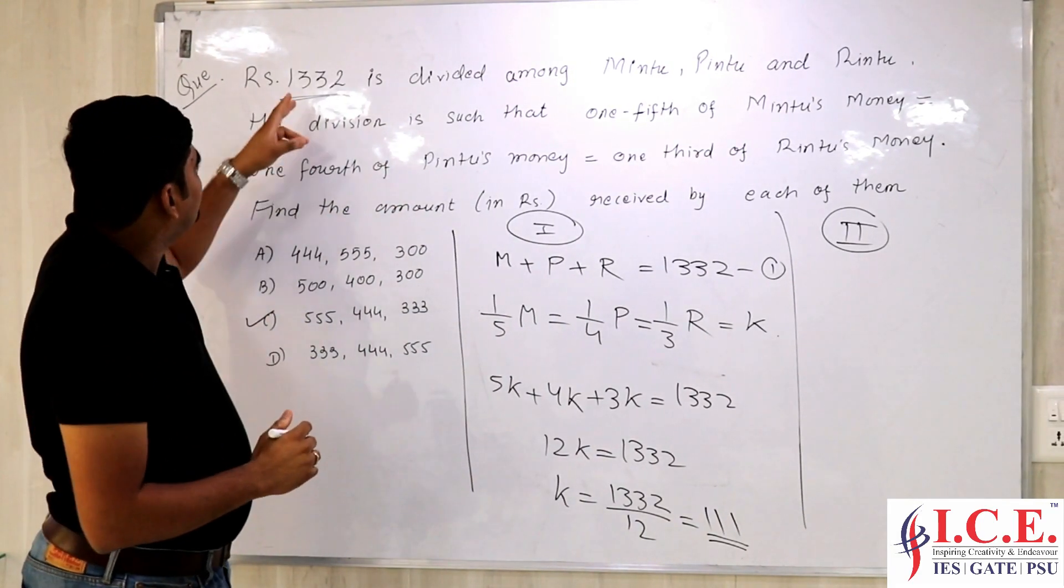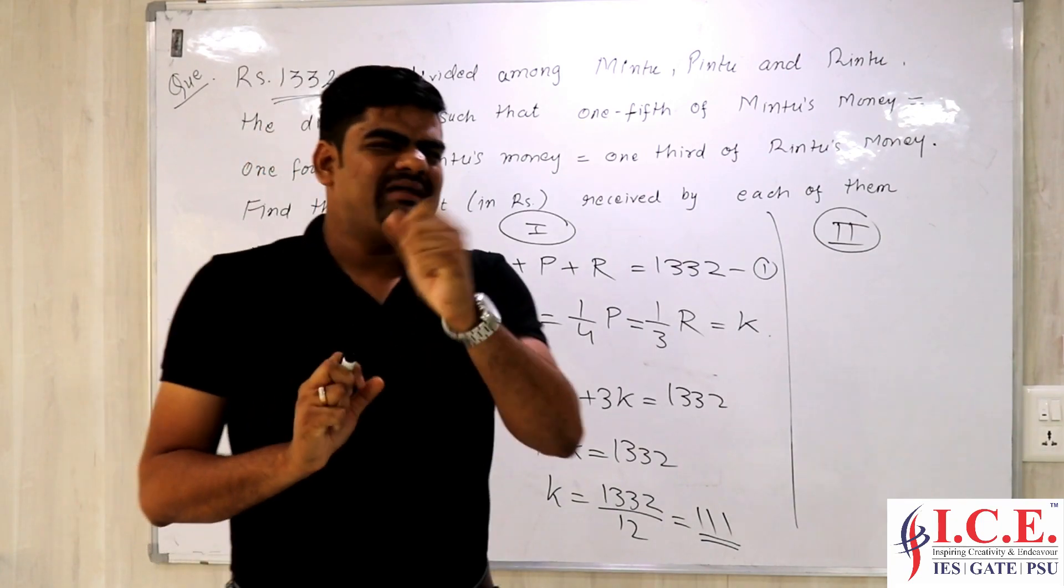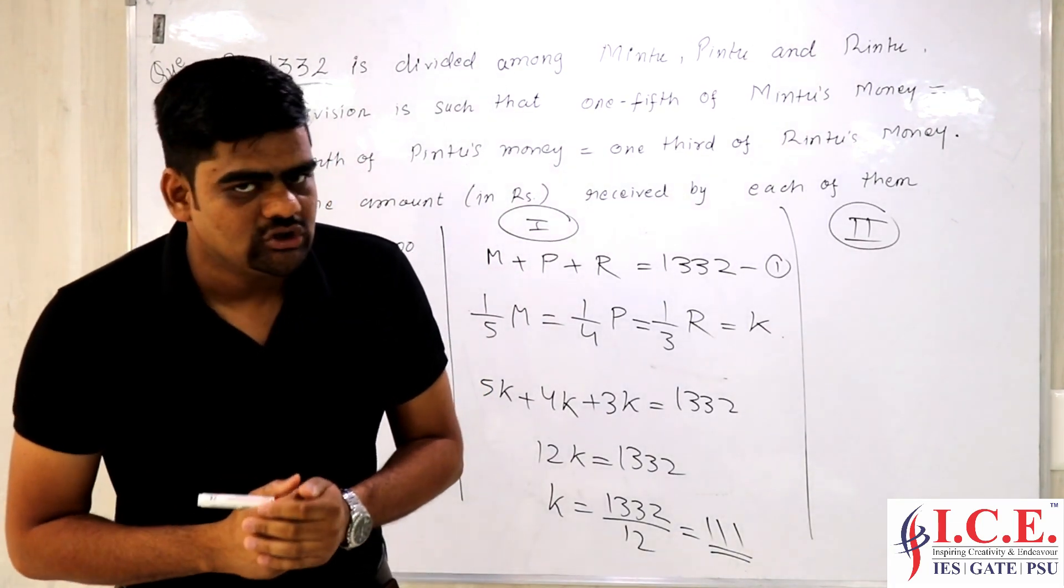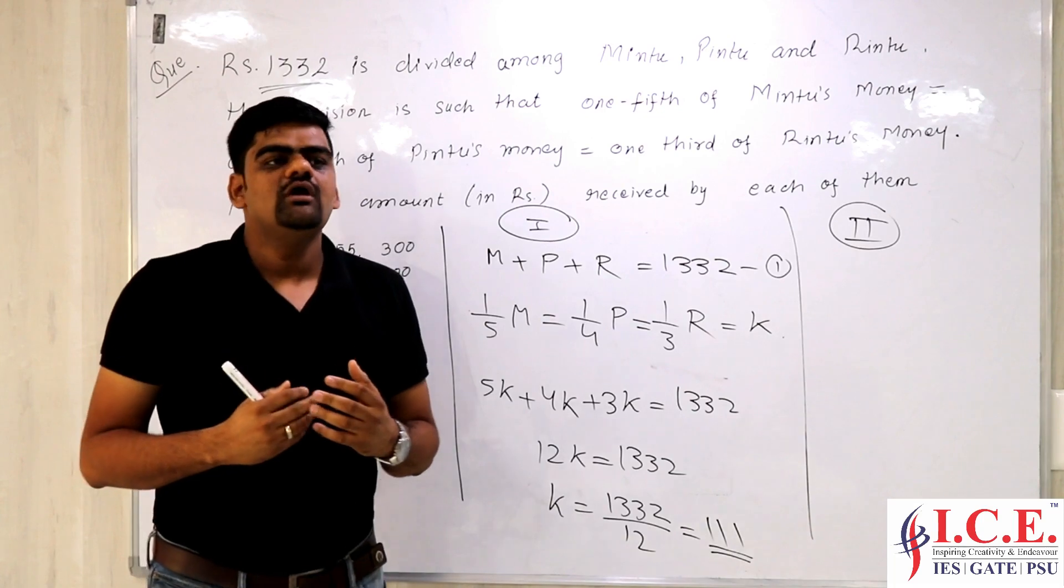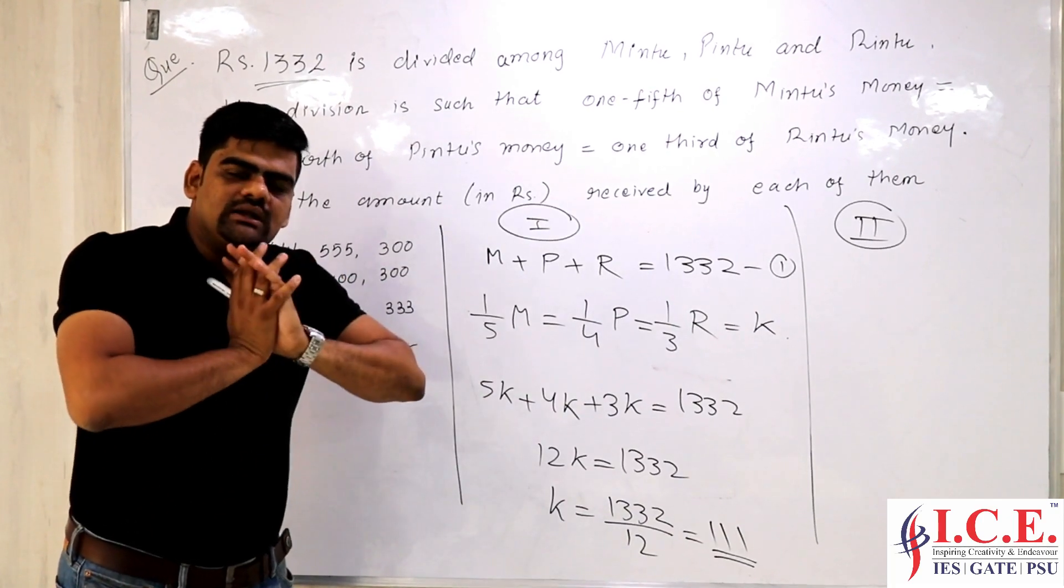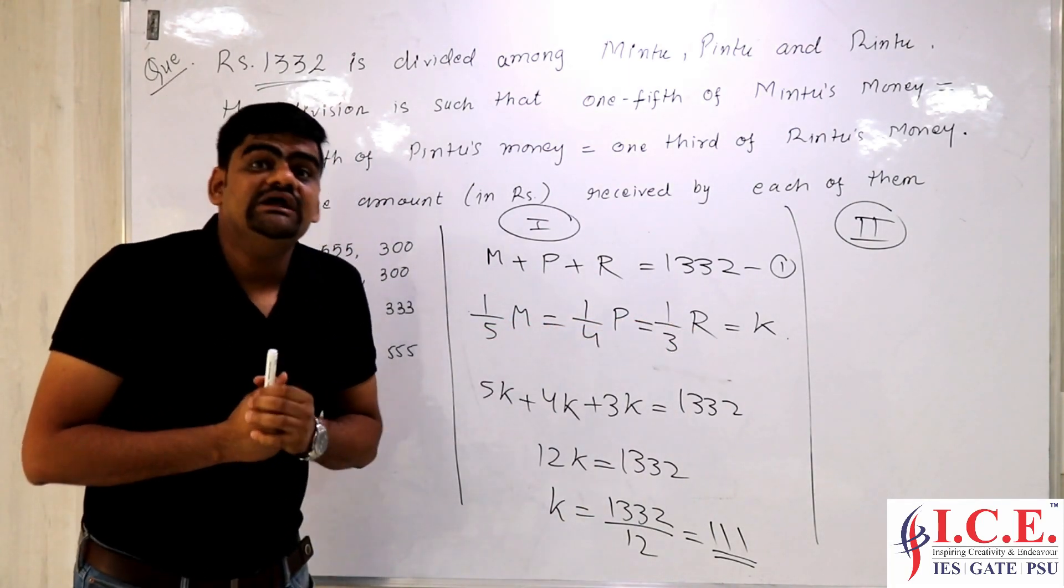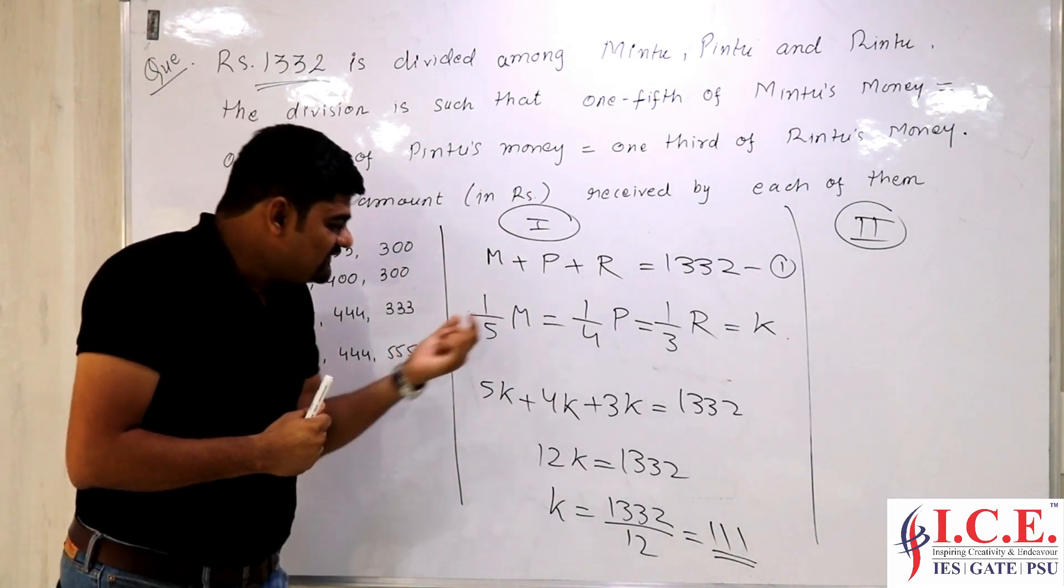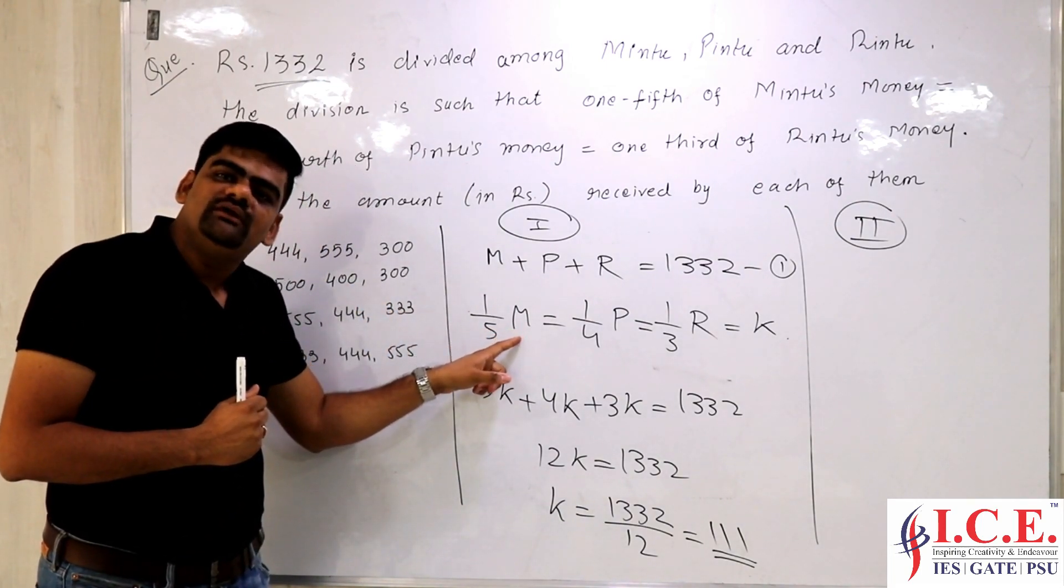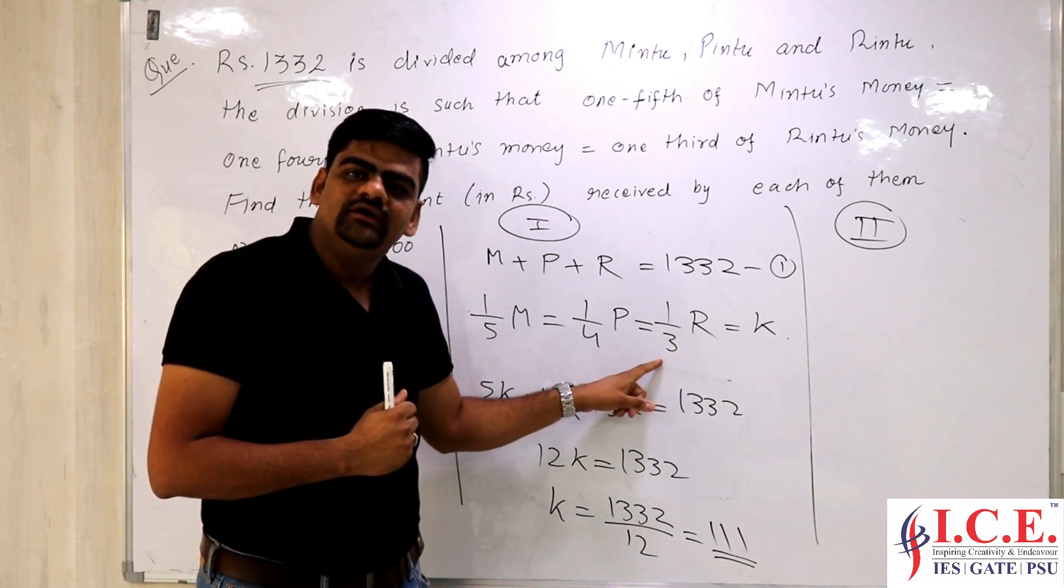It is very clearly mentioned that the amount total is 1332. Secondly, when you look at the test, they are not testing your mathematical skills. They are basically testing you on how good are you at logic. Typically they will not test you with calculations. They will test you how quick you can solve questions. For example, when I see these values, you can be very sure in 95 to 98% of the cases, these values of M, P and R will be integers. When I see these are going to be integers, I also know that M has to be a multiple of 5, P has to be a multiple of 4 and R has to be a multiple of 3.